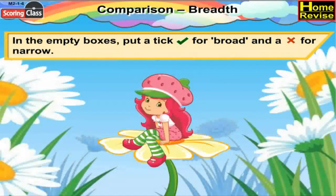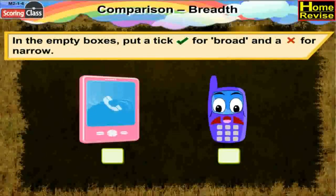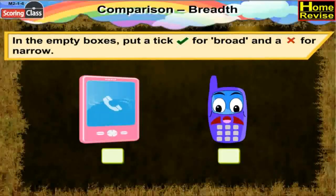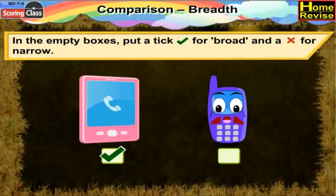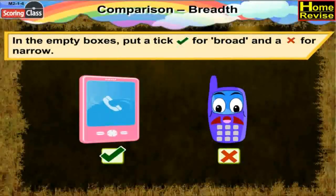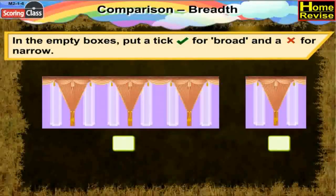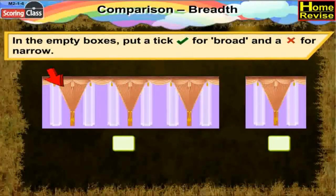In the empty boxes, put a tick for the broad object and a cross for the narrow one. In the first picture we have two mobile phones. If you notice the first mobile, you are right — it is broad, so put a tick for it. And the second mobile is narrow, so put a cross for it. In the second picture, can you see windows with curtains? The first window is broad, so put a tick for it. The second window is narrow, so put a cross for it.